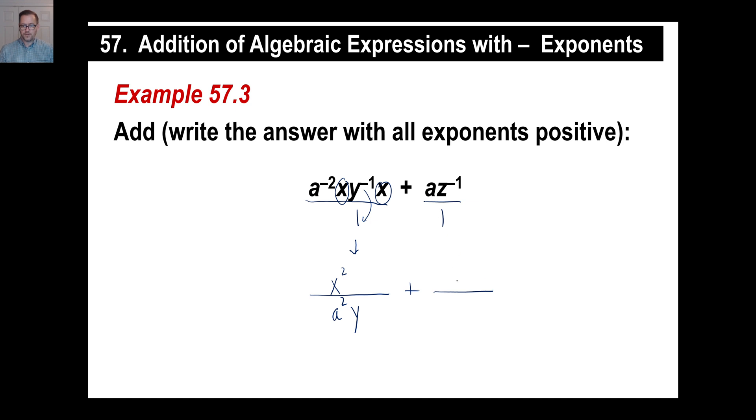This denominator, the A is fine the way it is. The Z⁻¹ goes down here and turns into Z¹. Alright. Let me just use another color to help you visualize this a little bit better. Well, obviously, we're going to need to have an A², a Y, and a Z in both these denominators, right? We're missing the Z for this one.